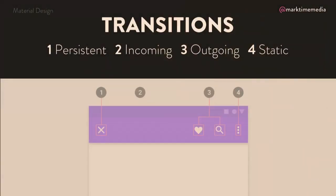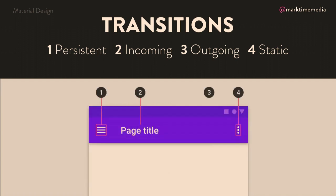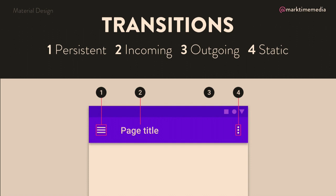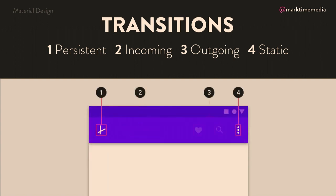There are several different kinds of transitions. I'm using a lot of examples from Google's material design, which had a lot of really good animated examples. Number one is persistent, which means it stays on the stage as it animates. Incoming means it wasn't on the stage and now it is. Outgoing is the opposite — it started on the stage and now is not. And static means it's not doing anything at all, but it's an object that other things might interact with or that might provide context, so it's still important.